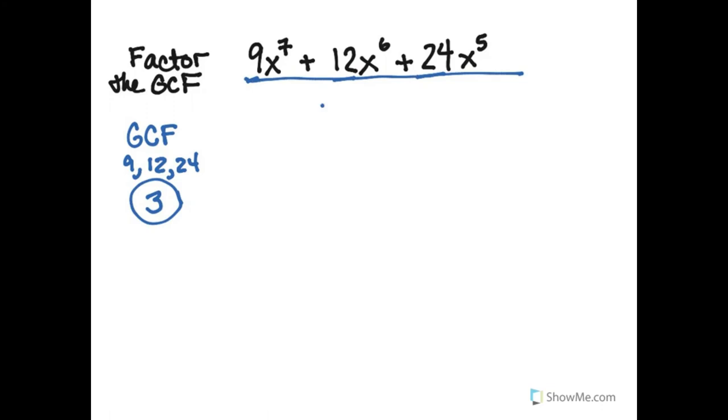So the greatest common factor of these three numbers is 3. That's going to go in the denominator. And then my variables are x seventh, x sixth, and x fifth. So the greatest common factor of the variables is x to the fifth, the lowest power present. So 3x to the fifth is what I'm going to divide each one of these numbers by. And 3x to the fifth is what I have factored out.